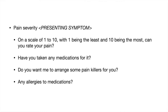Once done, you can turn to the examiner and mention you'd like to arrange painkillers, or tell the patient directly: 'I've asked one of the nurses to arrange some painkillers for you. It will take time to work — meanwhile, is it okay if I ask a few questions to find the cause of your pain?' Once the patient agrees, you can proceed with history taking.